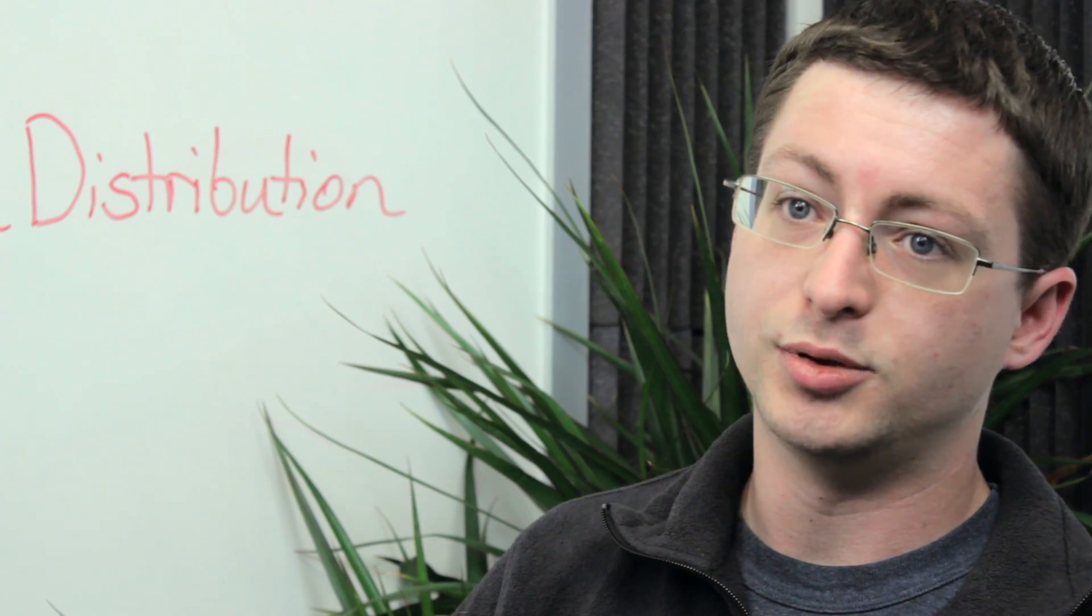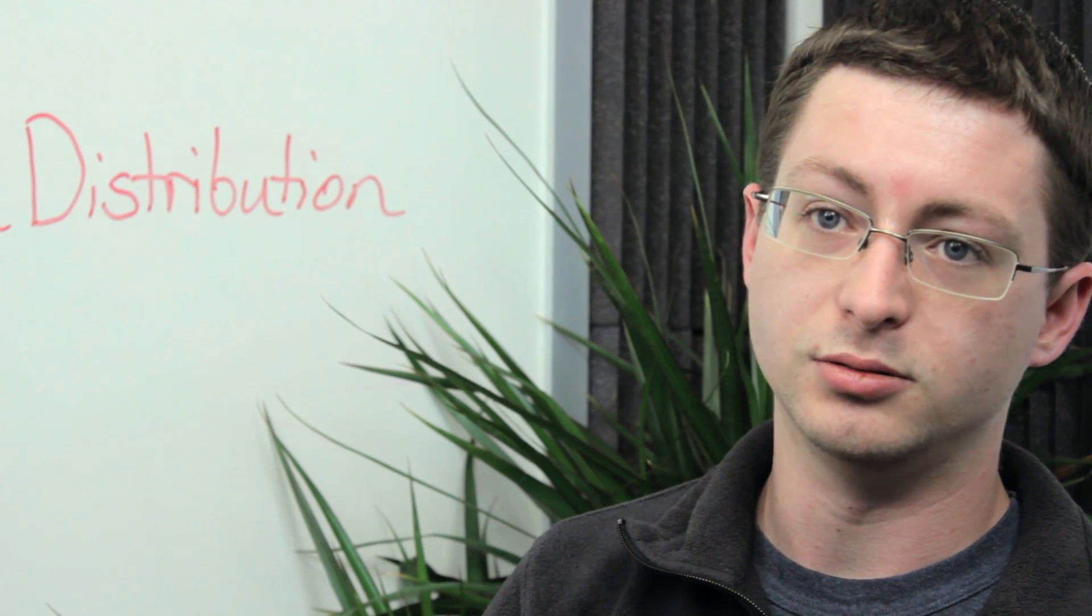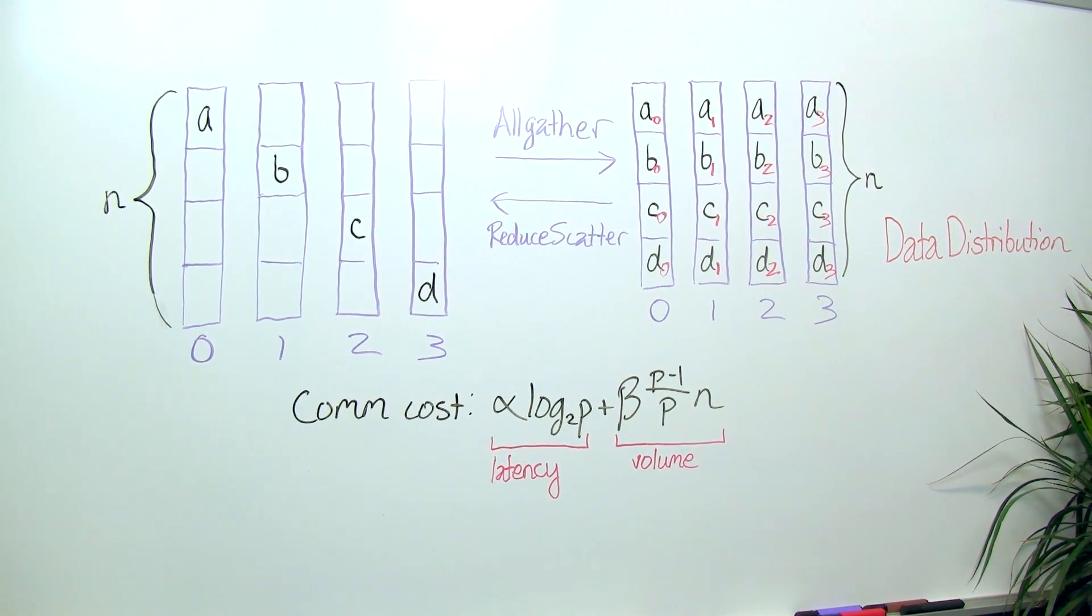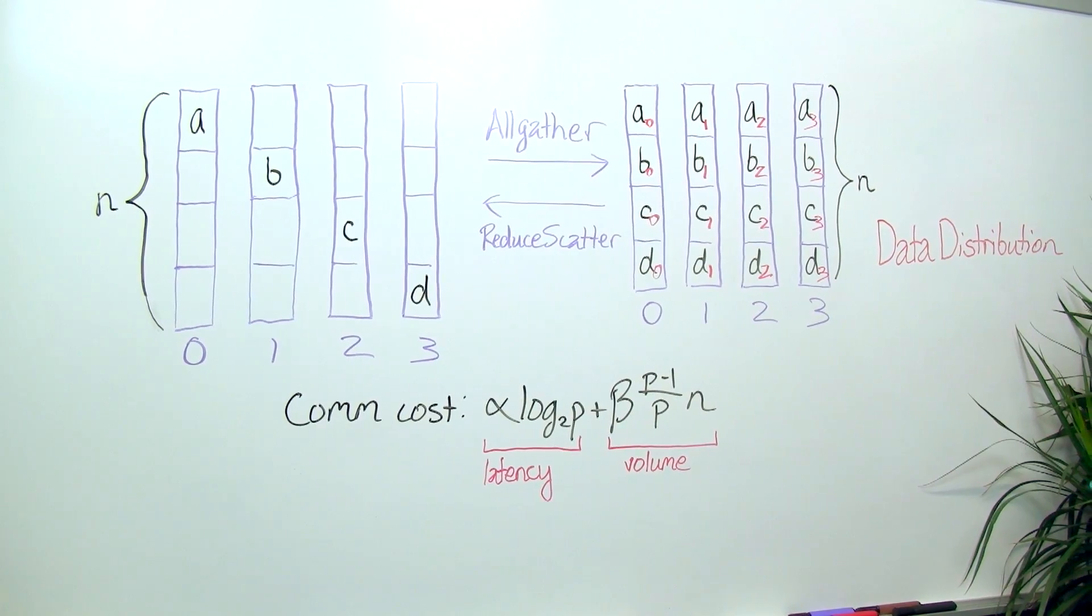Just using this simple analysis, we can conclude that two-dimensional data distribution is necessary in order to perform dense matrix vector multiplication in a scalable way.